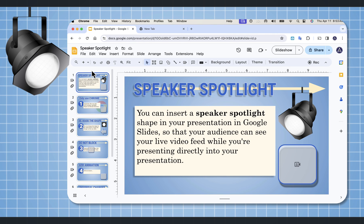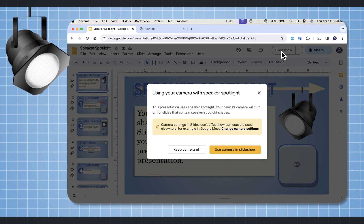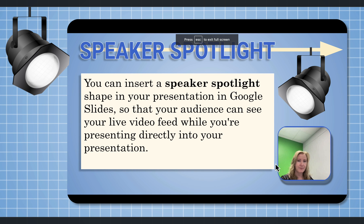To see how this works, you want to have your slide presentation. I'm going to select Slideshow. A description box comes open saying that this presentation uses Speaker Spotlight. Your device's camera will turn on for all slides containing the Speaker Spotlight. Camera settings and slides don't affect cameras used elsewhere — for example, in your Google Meet. Let me select the button Use Camera in Slideshow and let's see what this looks like. There it is — a nice little object with a drop shadow.